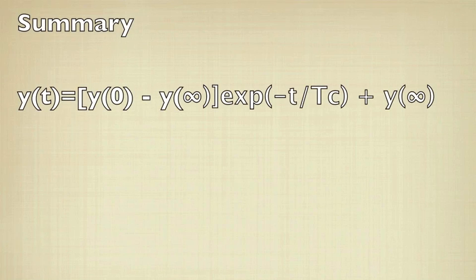In summary, in this ECE 201 lesson we've developed an equation to solve for the state variable in a first-order RL or RC circuit with a step function input — that is, for the capacitor voltage or inductor current. The equation states that the state variable as a function of time equals the quantity initial value minus final value times e to the minus t over tc, plus the final value, where tc is the time constant. We've discussed the role time constants play in quantifying how fast a circuit switches from one state to another, which is an important figure of merit in many electronic systems.